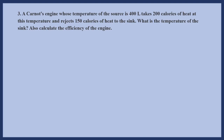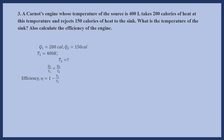In the third question, a Carnot's engine has a source temperature of 400 Kelvin. It takes 200 calories of heat at this temperature and rejects 150 calories of heat to the sink. We need to find the temperature of the sink and the efficiency. We have Q1 as 200 calories, Q2 as 150 calories, and T1 as 400 Kelvin. Using Q1 upon T1 equals Q2 upon T2, we can find T2 since all other terms are given.